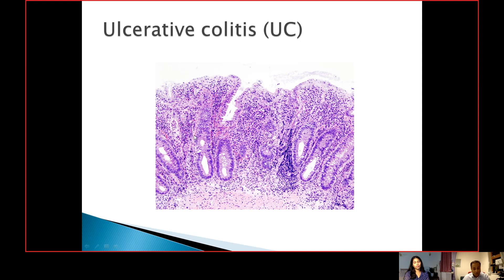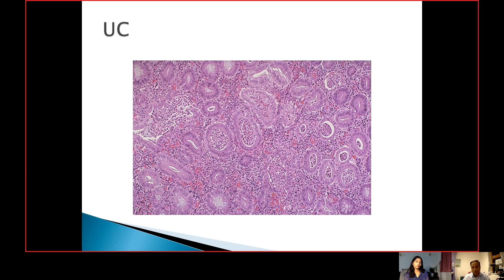There will be some acute changes including cryptitis, patchy or diffuse neutrophilic infiltrate, and crypt abscesses. At this low power magnification you can see this crypt being filled with neutrophils. On higher magnification, what you can see is more striking crypt abscesses all over the place. There would be cryptitis and also significant crypt architecture distortion.